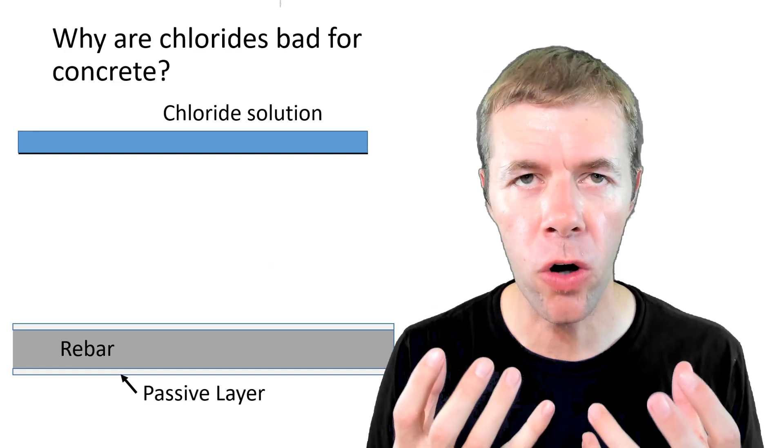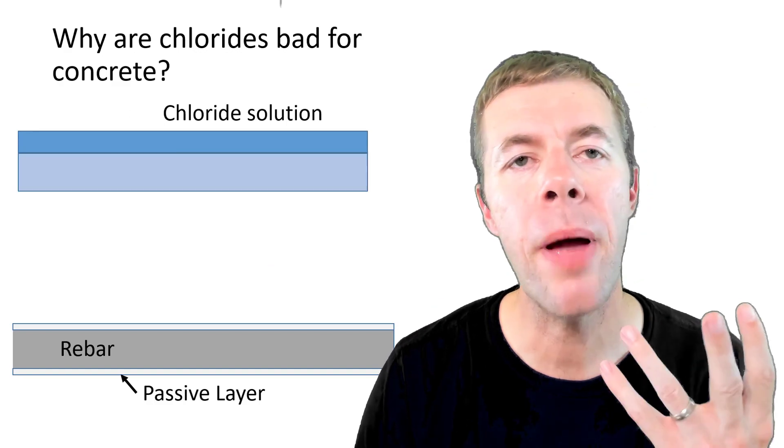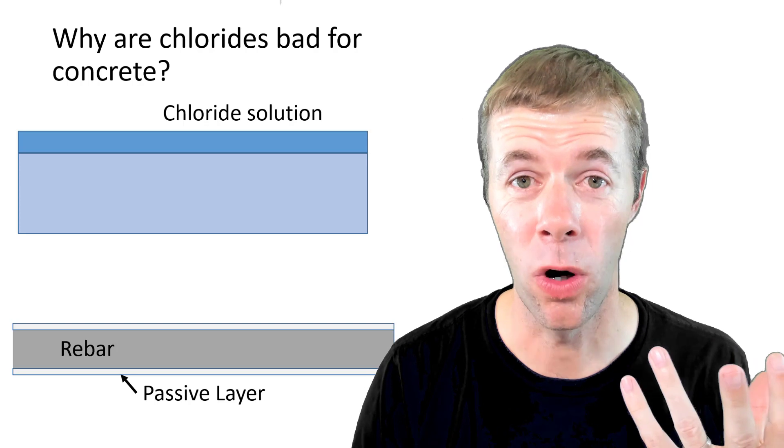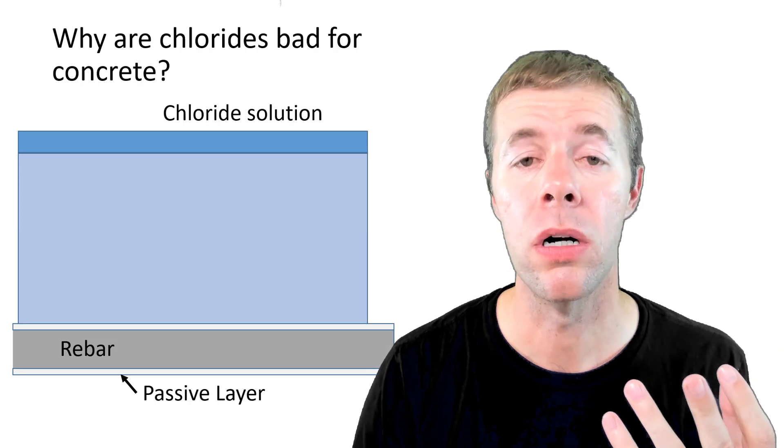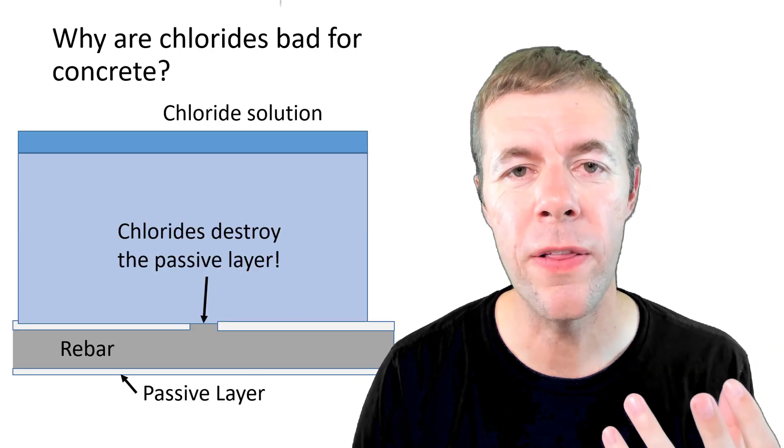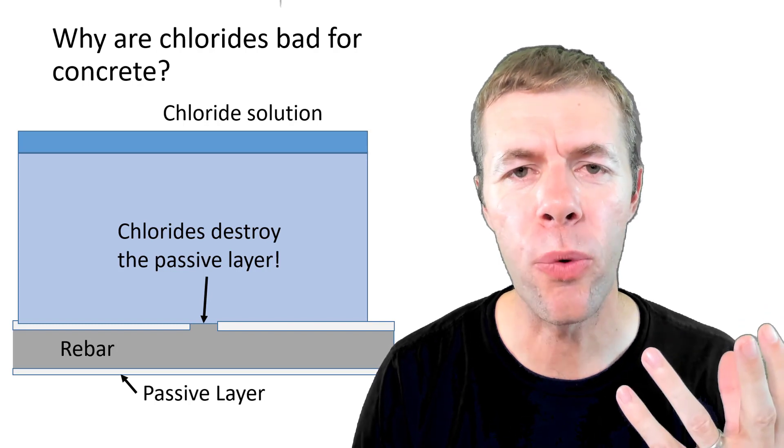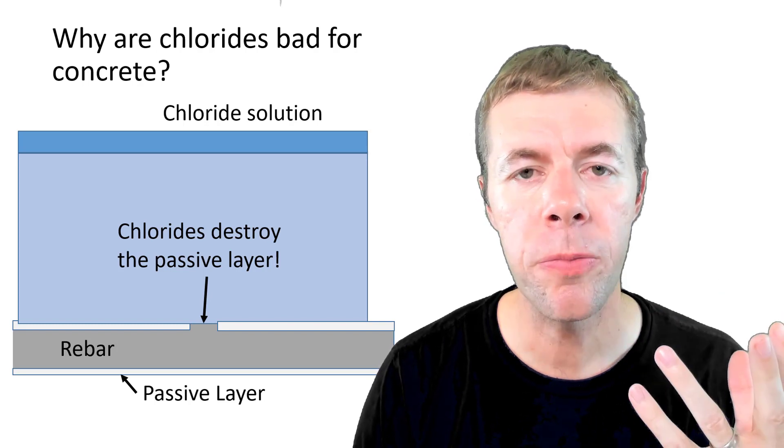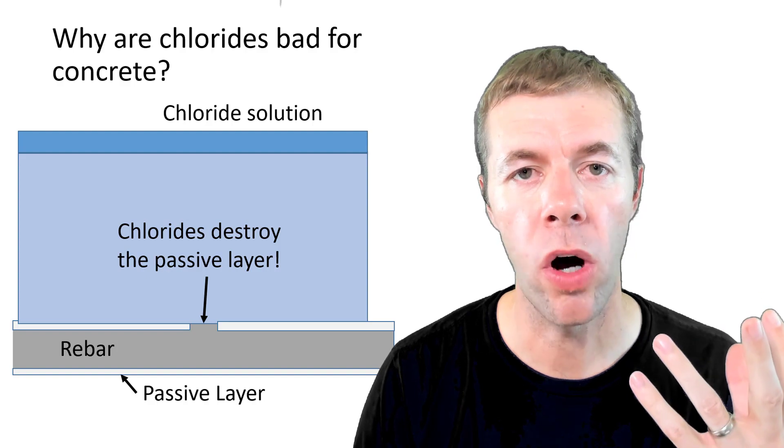So why are chlorides so bad for concrete? The chlorides start penetrating into the surface and more and more. When they get down to the rebar they destroy this passive layer. They allow the rebar to be a hundred percent exposed to this water solution.